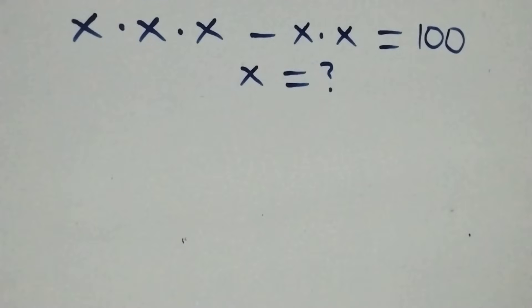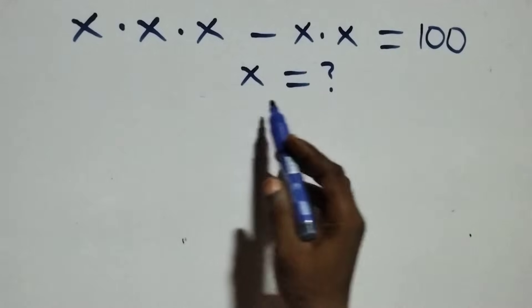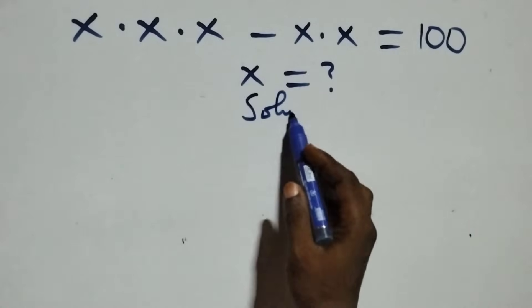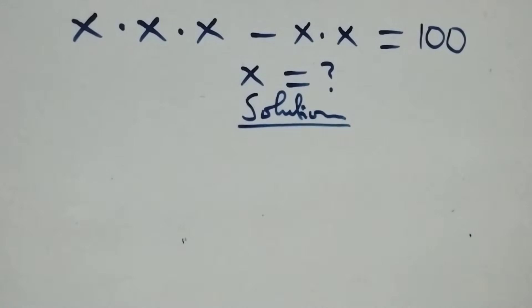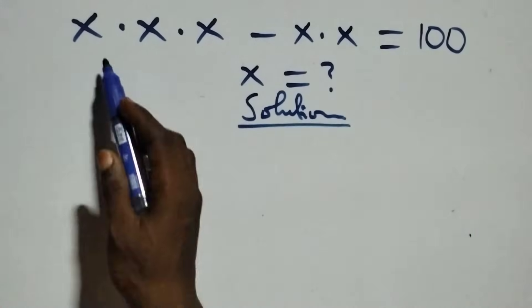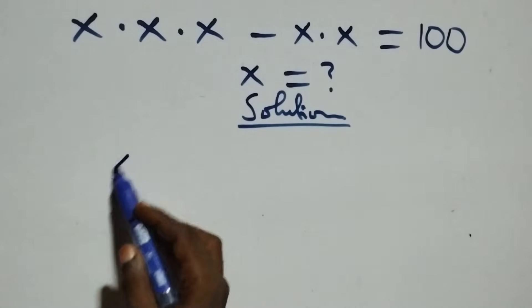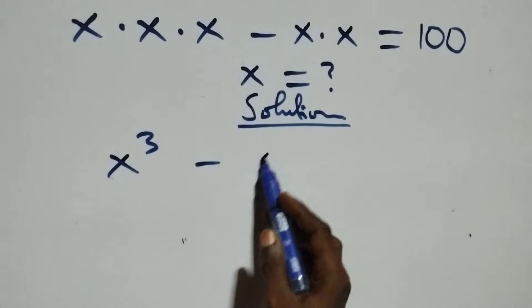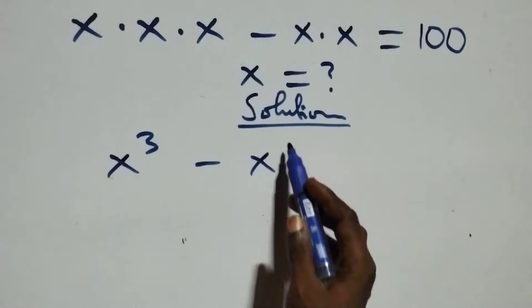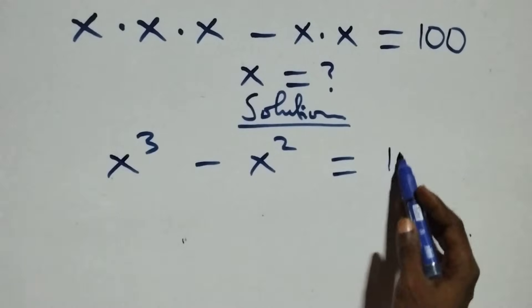Hello and welcome. How to solve this nice algebraic equation. From what we have here, we can write x times x times x as x raised to the power 3, then minus x times x as x raised to the power 2, and equals to the constant on the right-hand side.